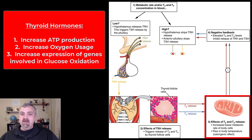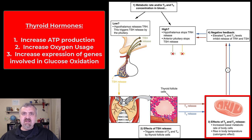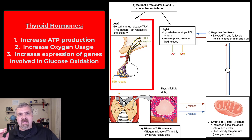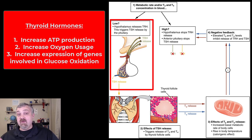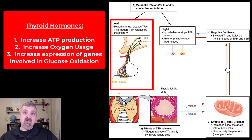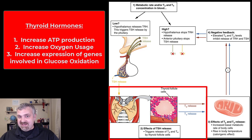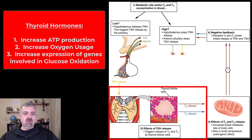Its role in the function of the nervous system is very well known and very important. The feedback system: if we need more thyroid hormone — more T3 and T4 — thyrotropin releasing hormone from the hypothalamus sends a signal to the pituitary gland to release thyroid stimulating hormone, which then signals the thyroid gland to produce and release thyroid hormones.